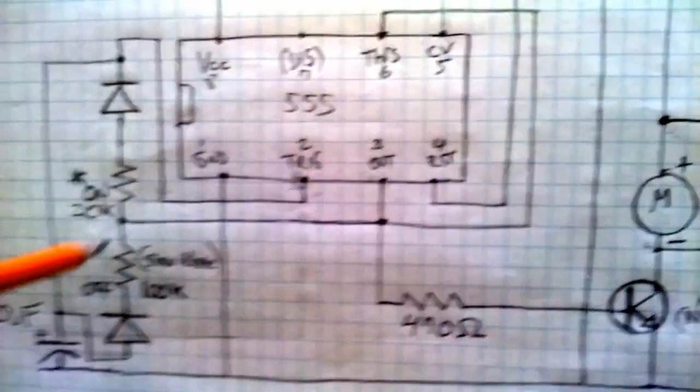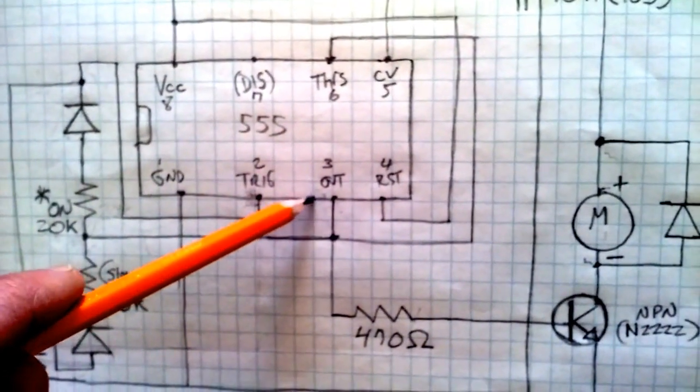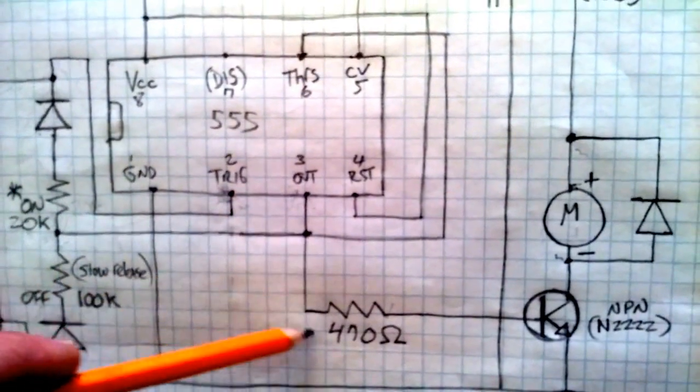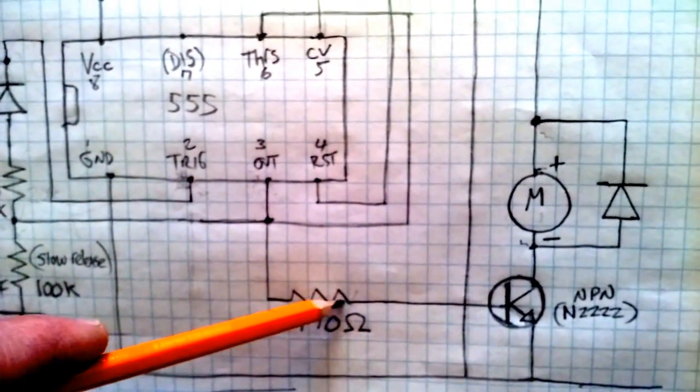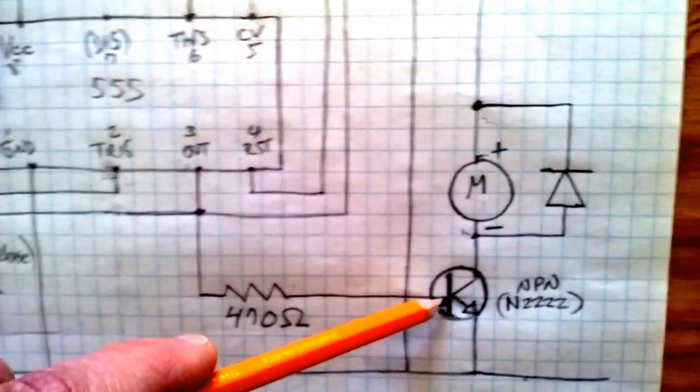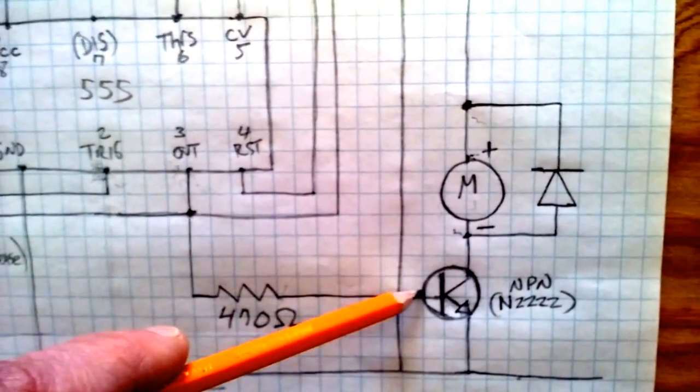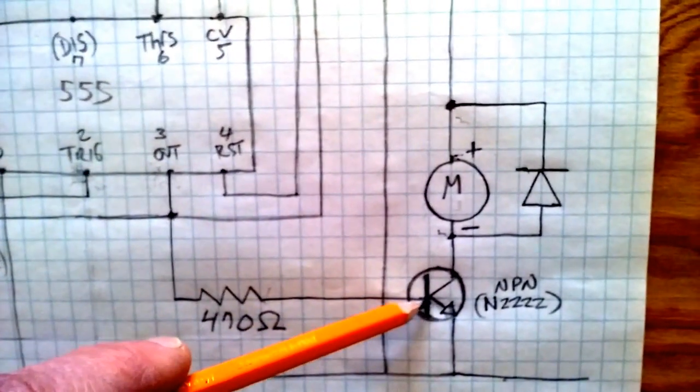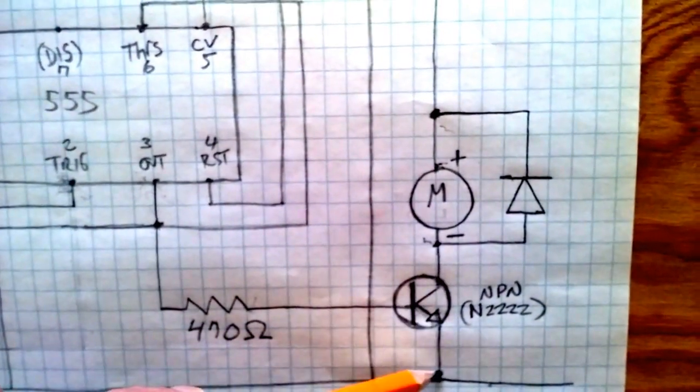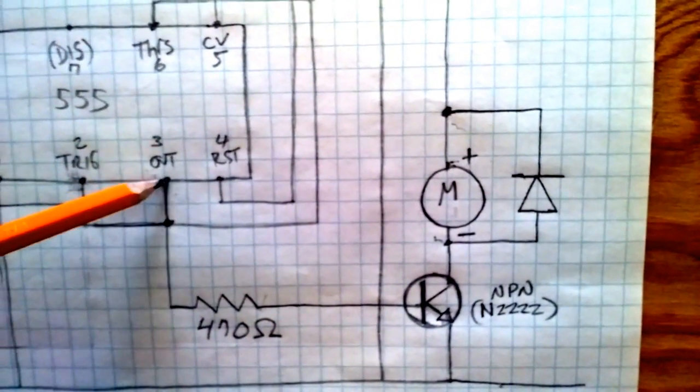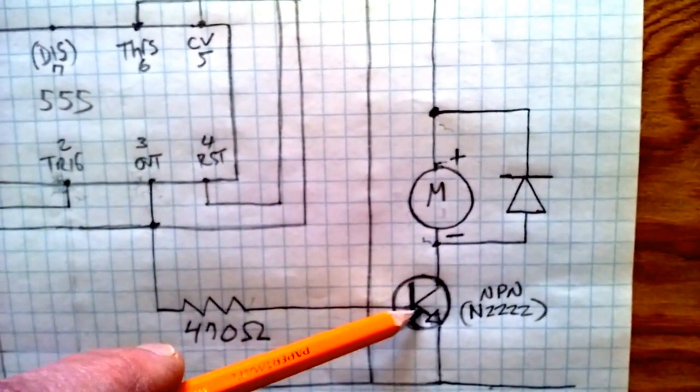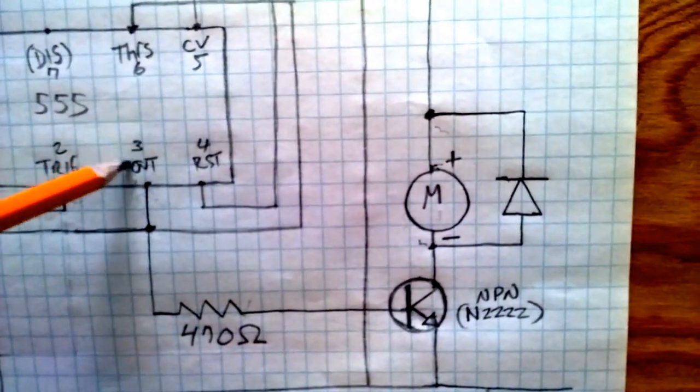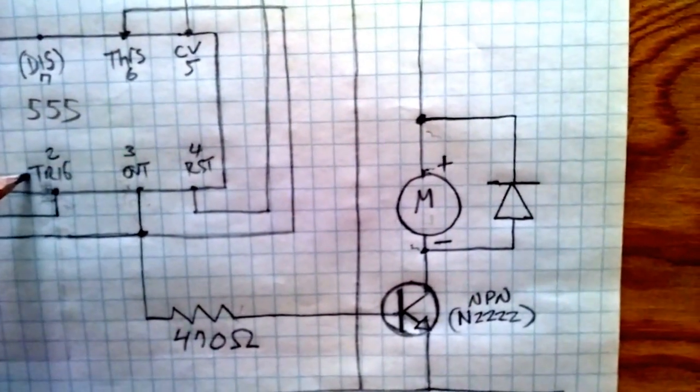I've got a 470 ohm resistor there going into an NPN transistor. Here's our base, collector, emitter to ground. So when we have voltage coming out here, when the trigger pin is